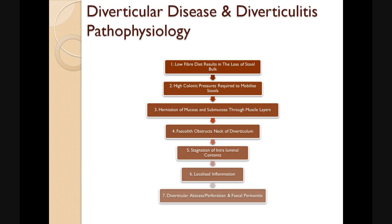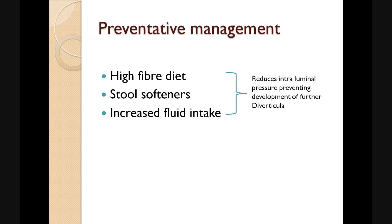A faecolith, or a stone of faeces, obstructs the neck of the diverticulum, which causes stagnation of the intraluminal contents. This leads to localised inflammation and, potentially, the development of a diverticular abscess, a perforation and faecal peritonitis. An important step in the management of this disease is preventative management, the aim of which is to prevent the development of further outpouchings, which can lead to episodes of diverticulitis.